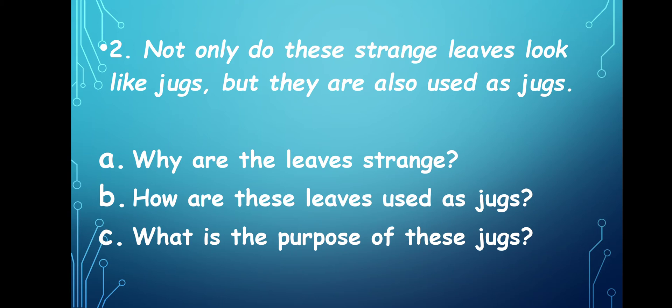Now let's go to the second one. 'Not only do the strange leaves look like jugs but they are also used as jugs.' The first question: why are the leaves strange? Usually we know the shape of a leaf, but this plant has a strange leaf because it is in the shape of a jug or a pitcher. These leaves are modified — the shape of the leaf itself is a jug. That's why the leaves of the pitcher plant are a little strange.